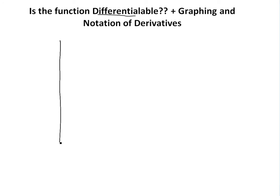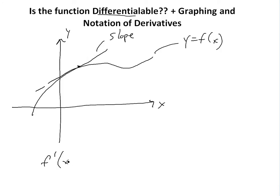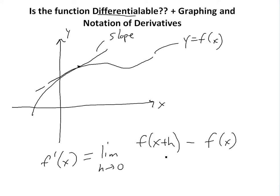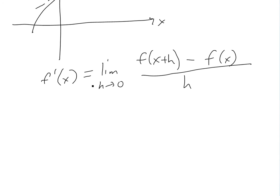In my other video I showed that a derivative is just a slope at any point. So if you have an x-y graph with a curve y equals f of x, basically if you want to take the derivative, it is the slope. The slope is equal to the derivative, and you write it as the limit as h approaches 0 of f of x plus h minus f of x, divided by h.